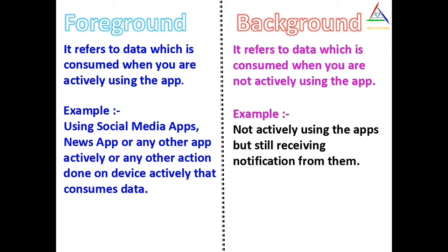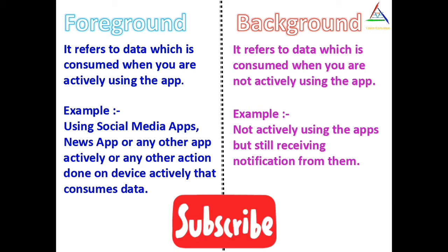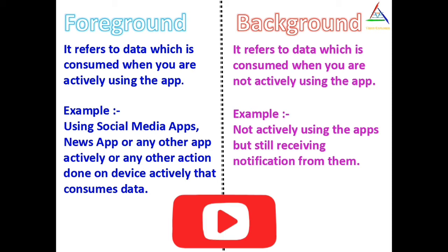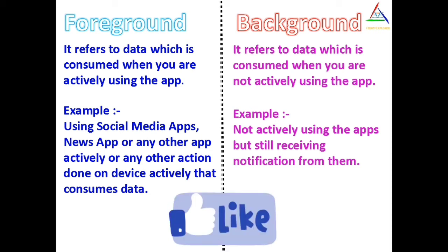Examples of data consumed when you are not actively using apps — that means in background — are when you receive a notification from a particular app when you are not using it, whether it be social media apps, news apps, game apps, study apps, bank apps, or any other app from which you receive a notification when not actively using it. These come under the category of background.